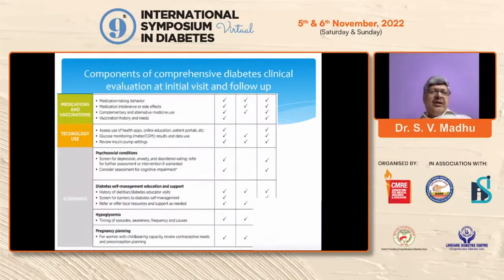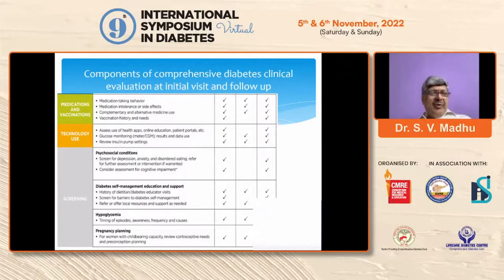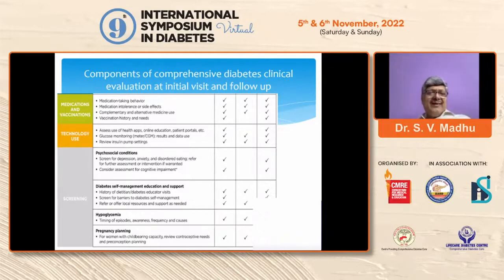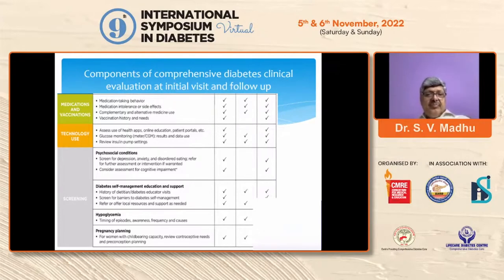Other components of evaluation include: medications the patient is taking, adherence and response to those medications, complementary or alternative medicines being used, vaccinations, and whether the patient is using glucometers, CGMs, or insulin pumps. Psychosocial conditions — anxiety, depression — are very important to assess these days because unless managed, glycemic control may remain elusive. Diabetes self-management education, hypoglycemia awareness, hypoglycemia frequency, pregnancy planning, and history of contraception also need to be considered.